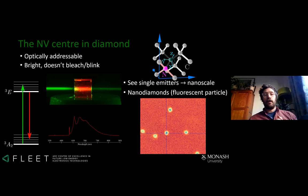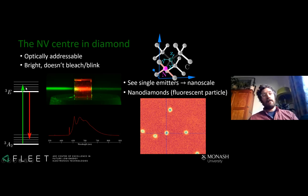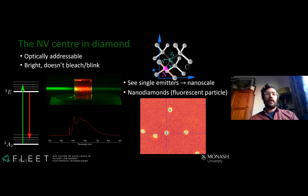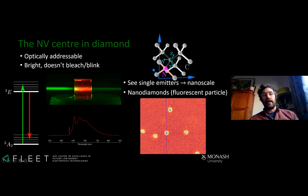I use the NV sensor as the sensor in my quantum microscope. It's an optically addressable defect in diamond — you can see a green laser coming in, the NV sensor absorbs it and emits red light. It's an off-resonant excitation, so the mismatch in wavelength is absorbed by phonons. These things are bright enough that I can see a single defect; with a high-resolution microscope I can see a single defect as a diffraction-limited blob of about 200 nanometers, but I'm still looking at a single atomic site.